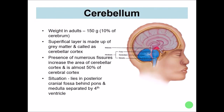The cerebellum is a smaller part of the central nervous system, present behind as well as below the cerebrum. The size of this cerebellum is almost one tenth of the cerebrum. The large cerebrum weighs almost 1500 grams, and the cerebellum weighs approximately 150 grams — almost one tenth of the cerebrum.